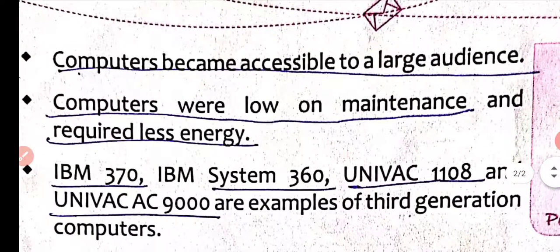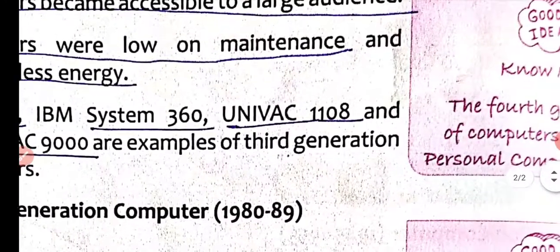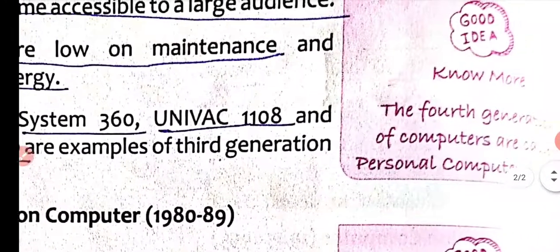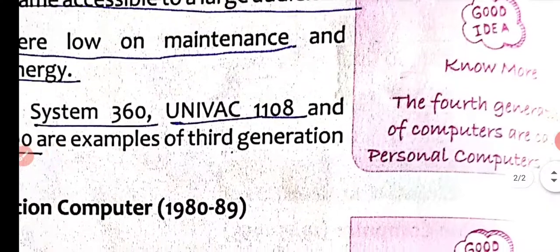Third generation computers were low on maintenance and required less energy. IBM 370, IBM 360, UNIVAC 1108, and UNIVAC 9000 are examples of third generation computers.